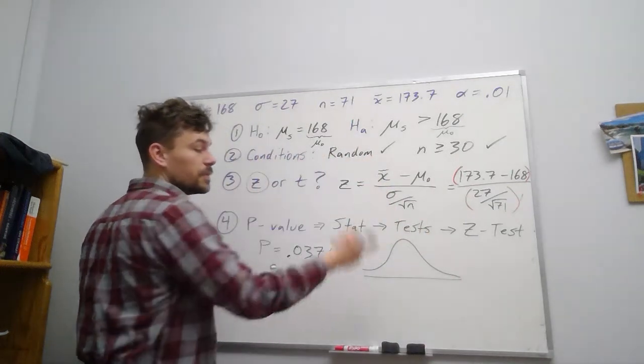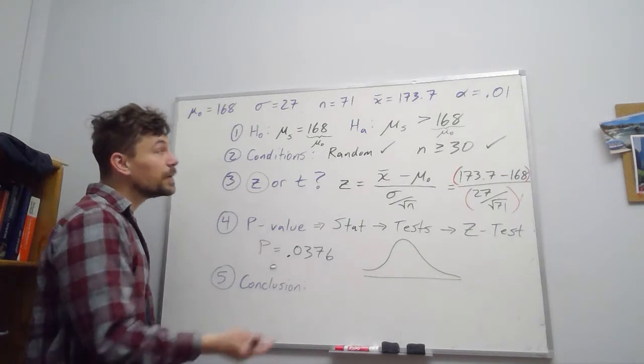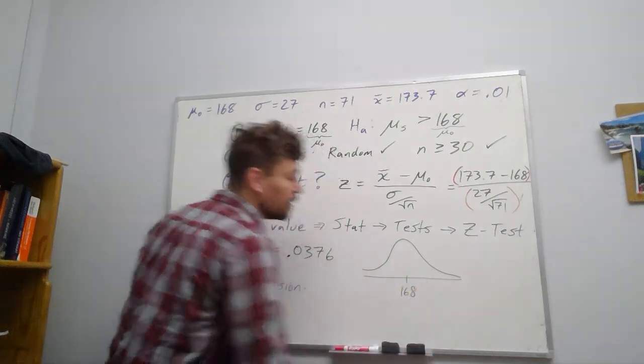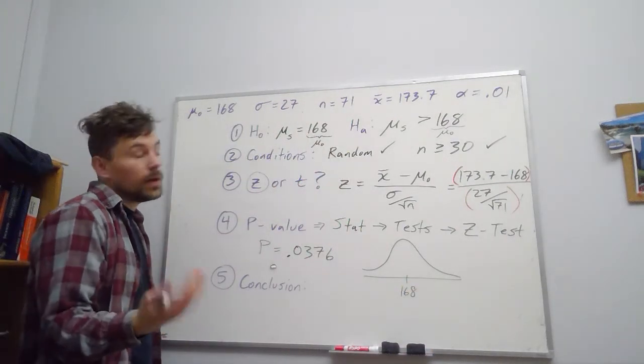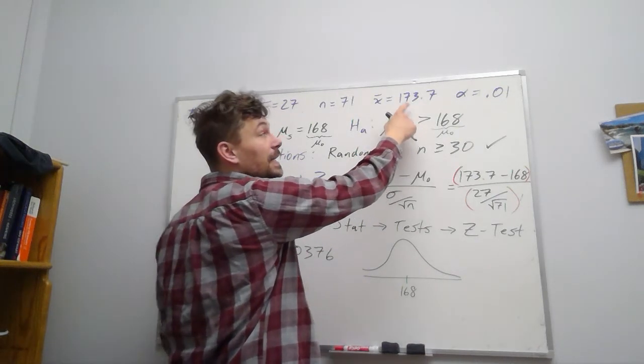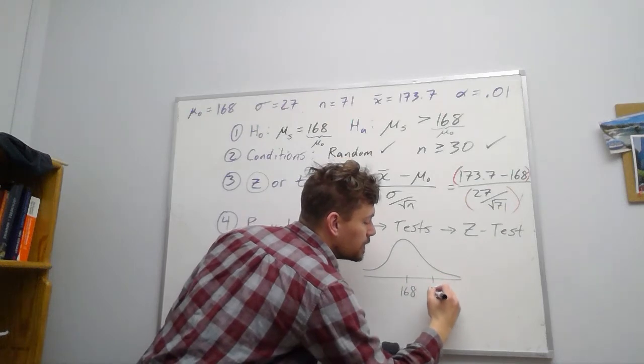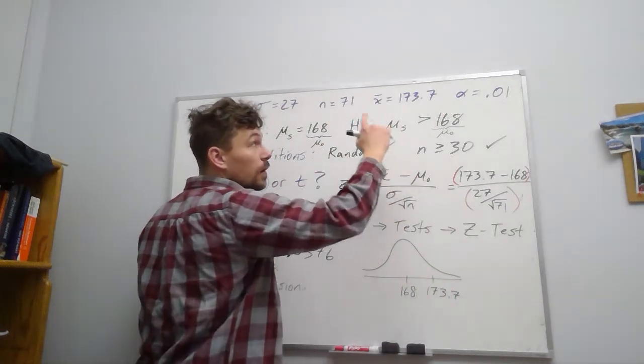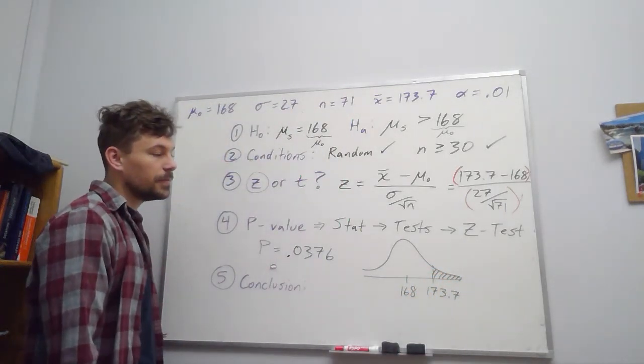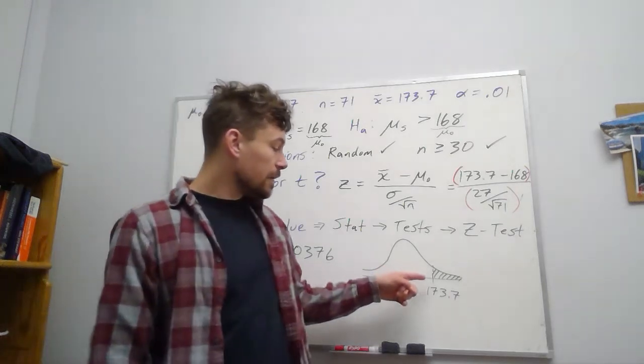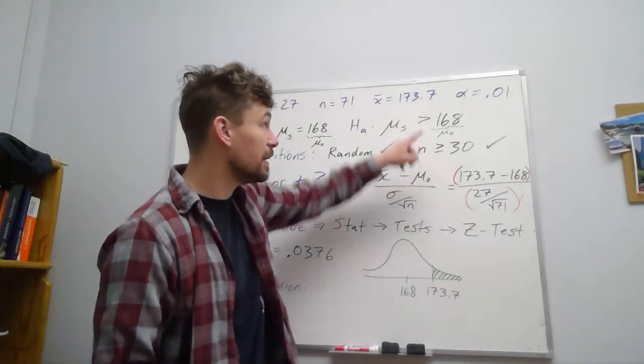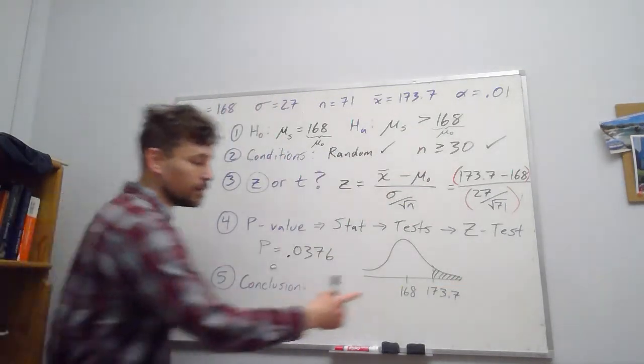Well, first of all, because we satisfied our conditions, we've got a normal curve. We are assuming that 168 is the true mean value, and we are asking ourselves, what is the probability of taking a sample and getting a mean of 173.7 or larger? Right, what's the probability of landing there?